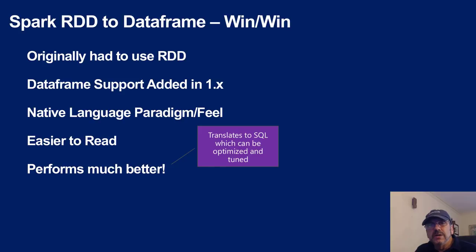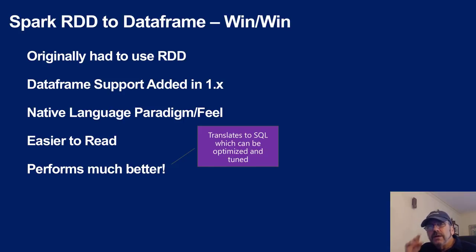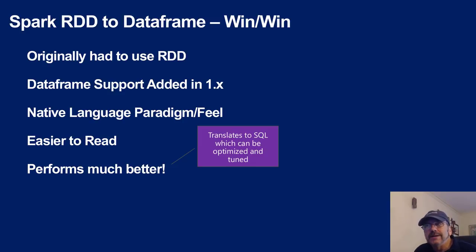Under the covers, when you make requests in Spark SQL or DataFrames — which translate into SQL — the engine knows what you want because SQL is parseable. It can create query plans and optimize them, just like SQL Server, Oracle, or Postgres have optimizers. That's what DataFrames give you: they provide the Spark engine much more information about your intention, which is why they perform a lot better.